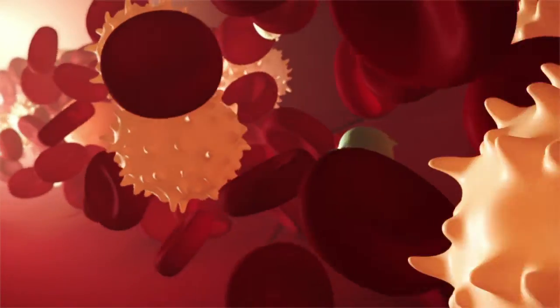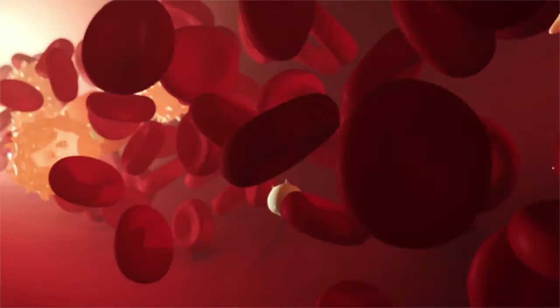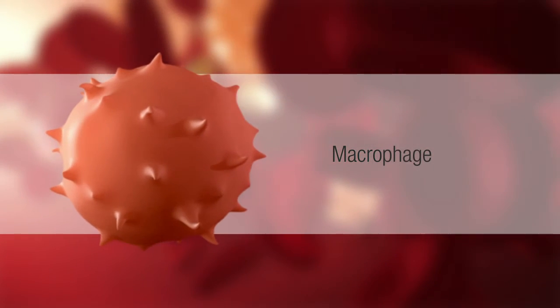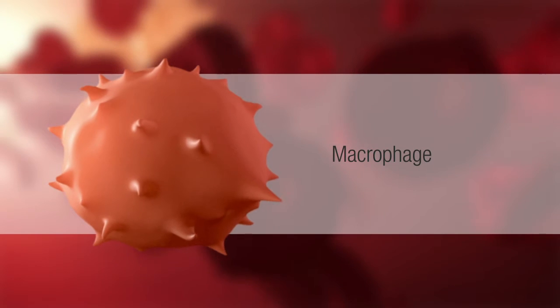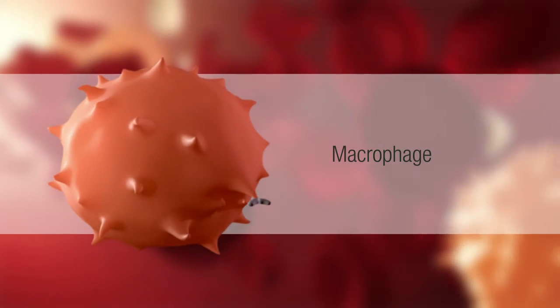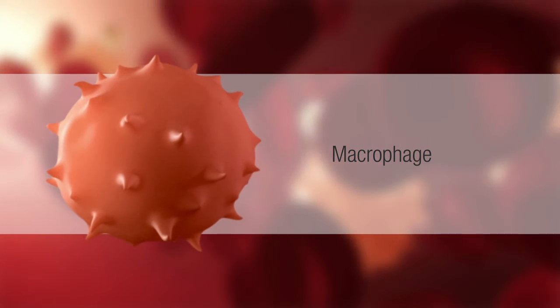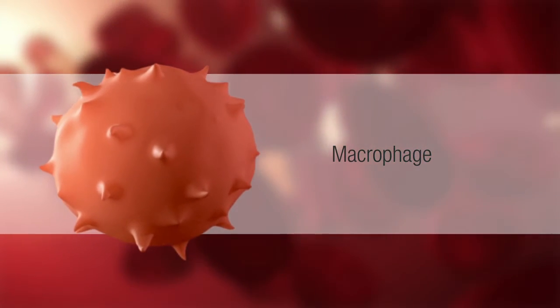White blood cells are cells of the immune system that protect the body from infectious agents. Macrophages, produced upon monocyte differentiation, are white blood cells that engulf foreign materials. Well known as efficient phagocytes, macrophages also play a diverse role in various aspects of the immune response.